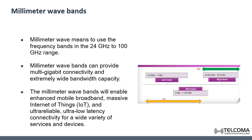But there is one drawback for the millimeter waves, which is that they cannot easily travel through buildings and can be absorbed even by rain. That's why 5G networks are actually moving from the traditional mobile network towers towards the small cell concept, which we will discuss in the next slides.